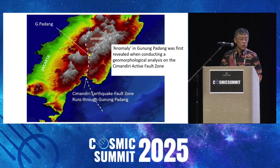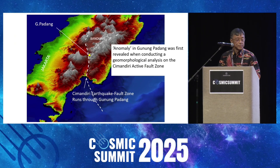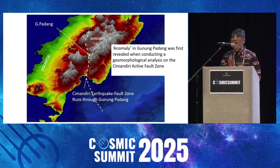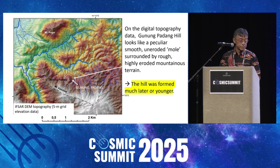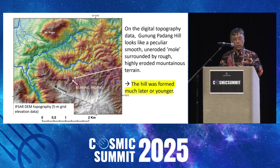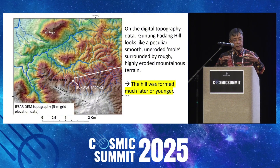I found the anomaly of Gunung Padang when I studied the Cimandiri Earthquake Fault Zone in West Java. The anomaly of Gunung Padang sits right next to the active fault that I was mapping at that time. The landscape of Gunung Padang stands out — it's very smooth and less eroded compared to the very eroded tertiary volcanic rocks around it. So it's potentially a man-made structure.